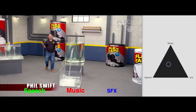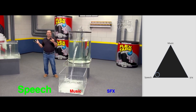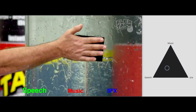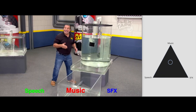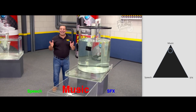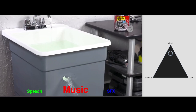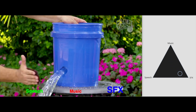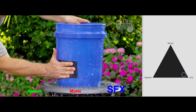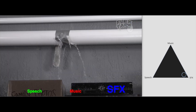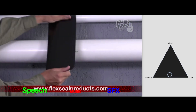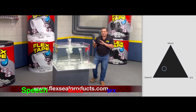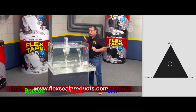Hi, Phil Swift here for Flex Tape — the super strong waterproof tape! No ordinary tape. Its triple thick adhesive virtually welds itself to the surface... but Flex Tape grips on tight and bonds instantly. Plus, Flex Tape's powerful adhesive is so strong...